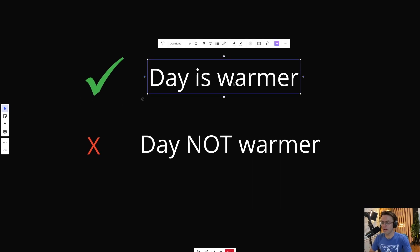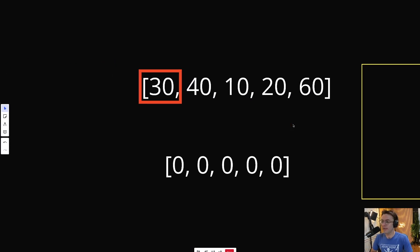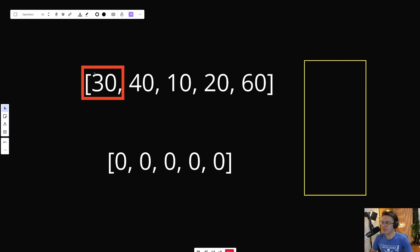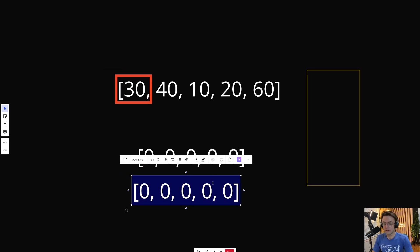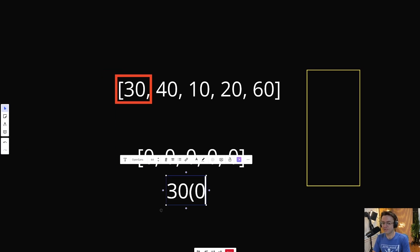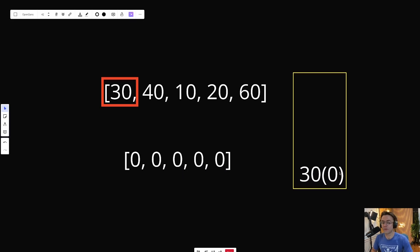If the day is warmer, it's what we want. We're going to pop it off the stack, process it, and count the number of days between the warmer day we're currently at and the last day added to the stack. If the day is not warmer, the only thing we're going to do is place it on the stack. The first element doesn't have any warmer day to compare to, so we just add it to the stack. When we add it, we add the index — in this case, index zero — along with the temperature to make things clear.